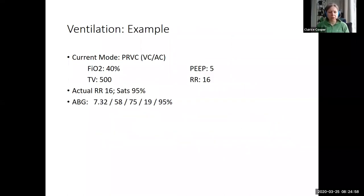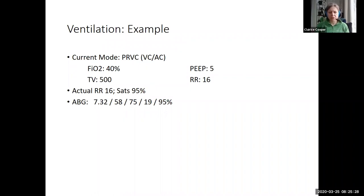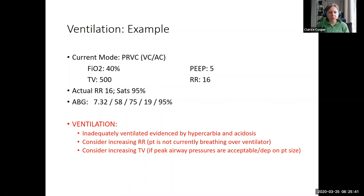Here's an example: PRVC, oxygenation is fine — so ignore the oxygenation. You've got a patient with a tidal volume of 500, a respiratory rate of 16, actual respiratory rate of 16, so they're just riding the vent, not initiating more breaths. You might want to pause on the gas. Your pH is acidotic, your pCO2 is elevated — so you have a respiratory acidosis. How can you deal with the hypercarbia? The answer is you have inadequate ventilation. You can consider increasing your respiratory rate since the patient's not breathing over the ventilator, and you can consider increasing your tidal volume if the peak airway pressures are acceptable and depending on the patient's size.